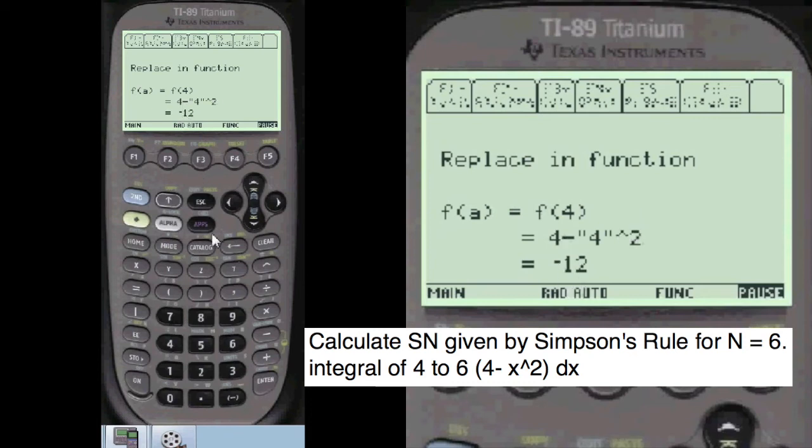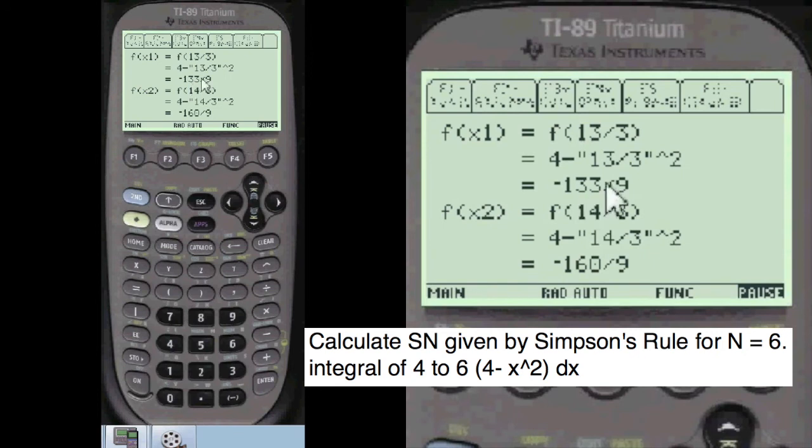Then we replace that in the function. Turns out to be replacing the f at 4 into the function here. Minus 12. Minus 133 over 9. Minus 160 over 9.